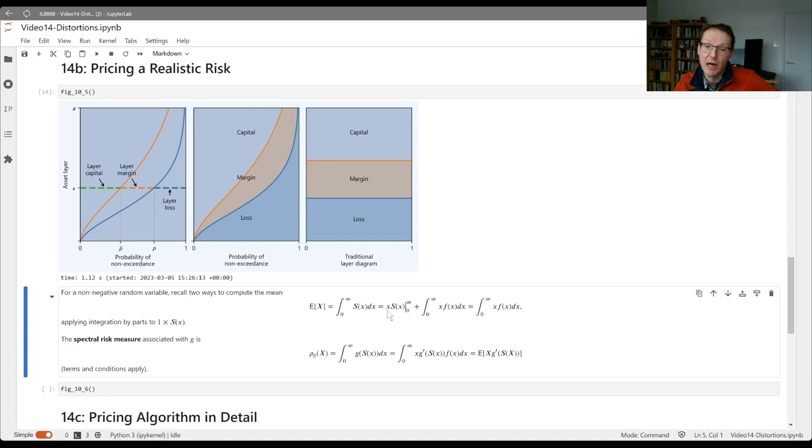This first term, the evaluation of x s of x between zero and infinity, goes away because if x is zero, this is zero, and if x is infinity, s of x is zero. So the average of this random variable here up to A is just the integral beneath this survival function, this area here that we've labeled loss in the middle.